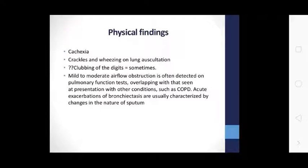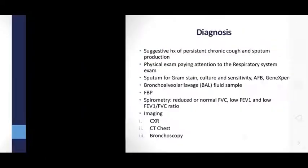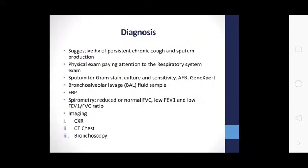Diagnosis of bronchiectasis is suggested by chronic cough with sputum production. Workup includes physical examination with attention to the respiratory system, sputum Gram stain, culture and sensitivity, acid-fast bacilli, bronchial lavage fluid sample, and spirometry showing reduced or normal FVC, low FEV1, and low FEV1/FVC ratio.